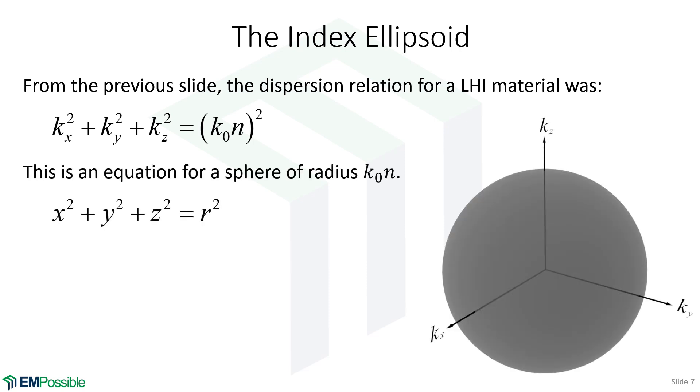It would be a sphere if your coordinates were kx, ky, kz, and the radius was k naught n. And in fact, that's how we're going to interpret it. And so we've drawn a sphere over to the right. That sphere is called a dispersion surface or a k surface. And it's very close to something that we'll call the index ellipsoid. And we'll see that. But a k surface and an index ellipsoid are essentially the same thing. They're just a constant different from each other.